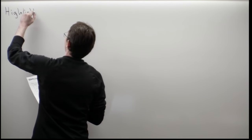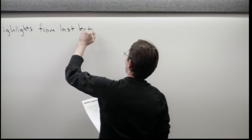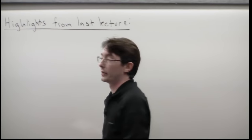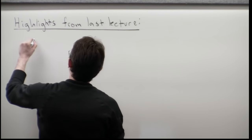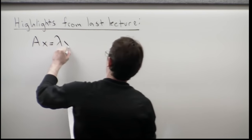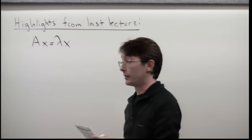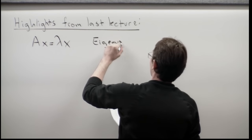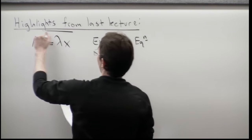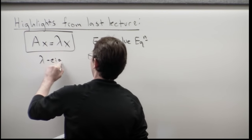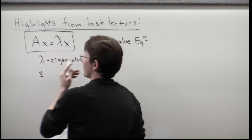What I'd like to do is start with a review of some highlights from the last lecture. This material on eigenvalues and eigenvectors is very important, so I really want to reiterate some of these points. We had this special equation Ax equals lambda x. This is definitely not satisfied for all vectors x and all values lambda. This is called our eigenvalue equation, and it's only satisfied for certain values lambda, which are called eigenvalues, and certain vectors x, which are called eigenvectors.